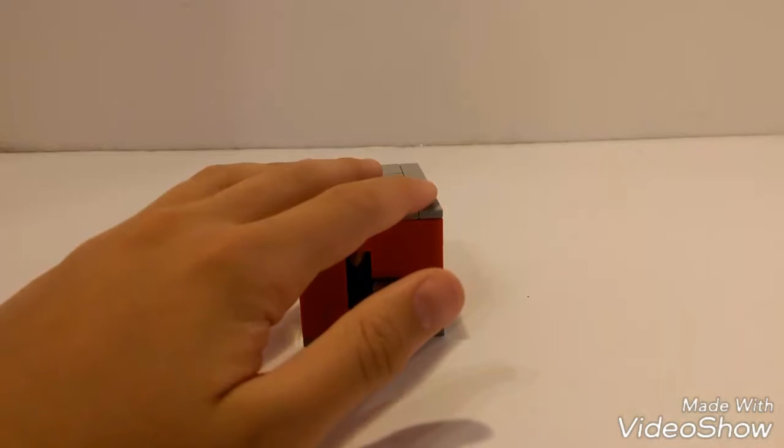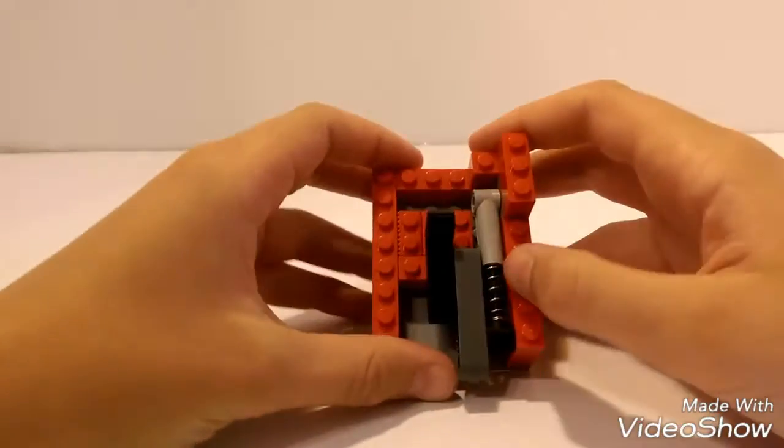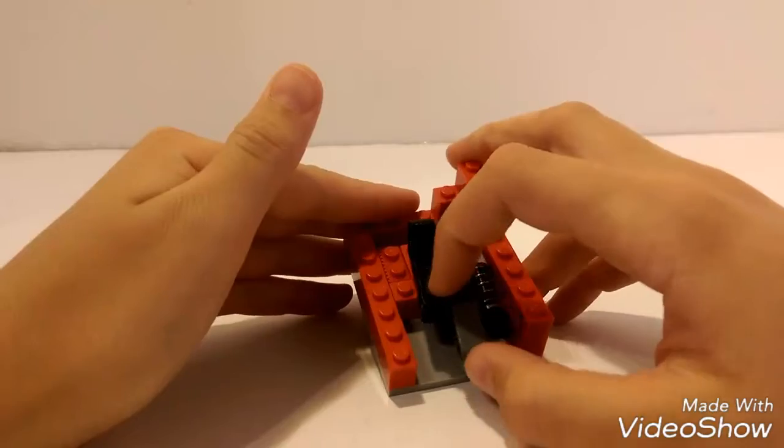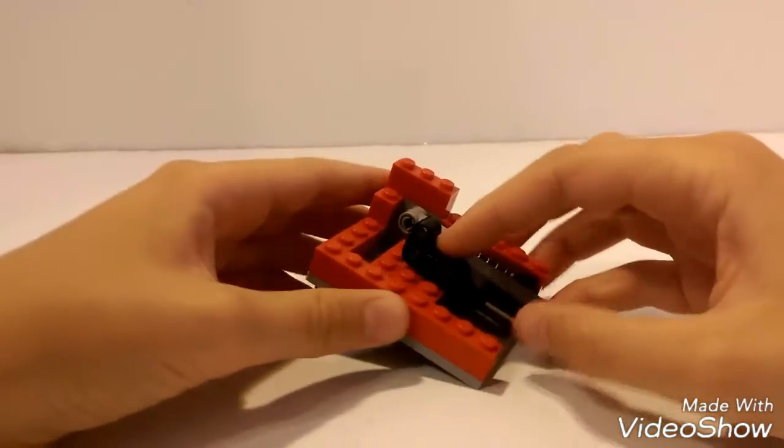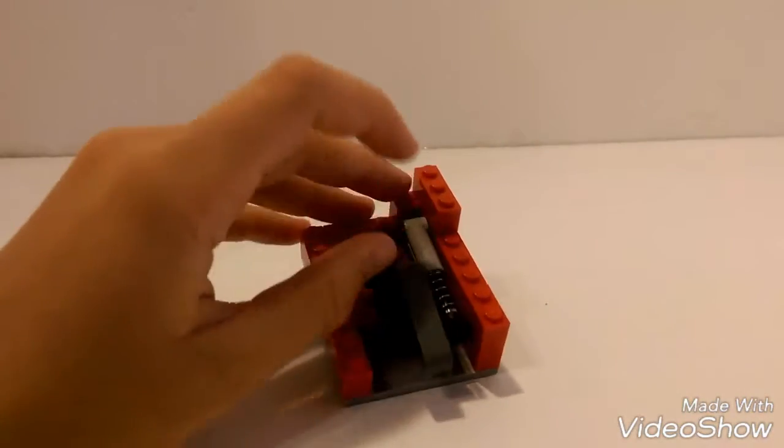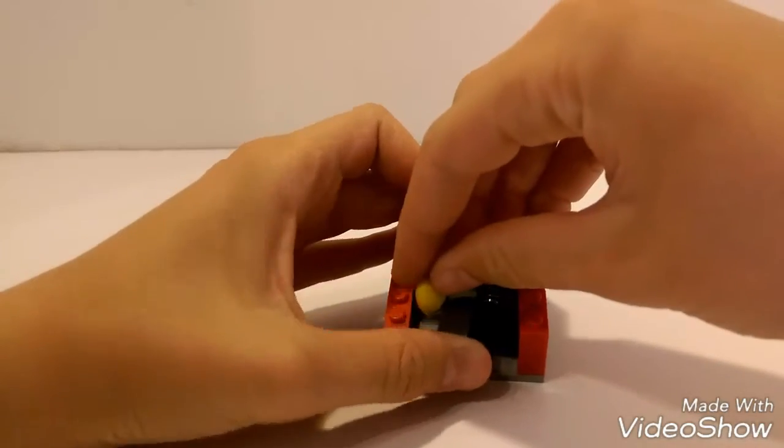So now let's get on to the mechanism. Here's the mechanism. We have this spring piece right here, so when you push it in, it just springs back out like that. And when you push it in, the candy falls out like that.